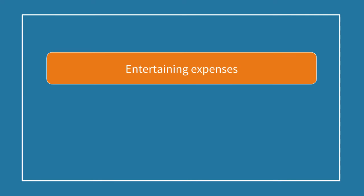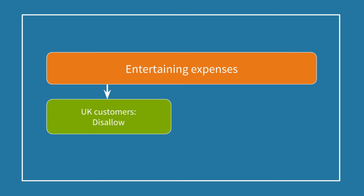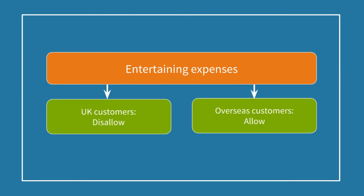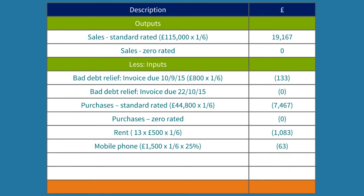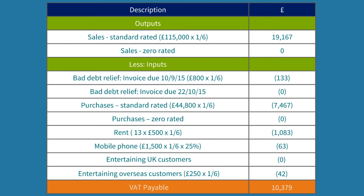Now the final point, point 6 — entertaining expenses. For entertaining, the VAT rules are similar to the income tax rules in that entertaining is generally disallowable, so no input VAT can be reclaimed. However for VAT purposes, VAT on entertaining overseas customers is allowable. UK customers go in at zero for half a mark. For overseas customers we take £250 multiplied by one sixth giving us £42. We can now total this up: outputs less inputs gives us VAT payable of £10,379. That's it for part A.